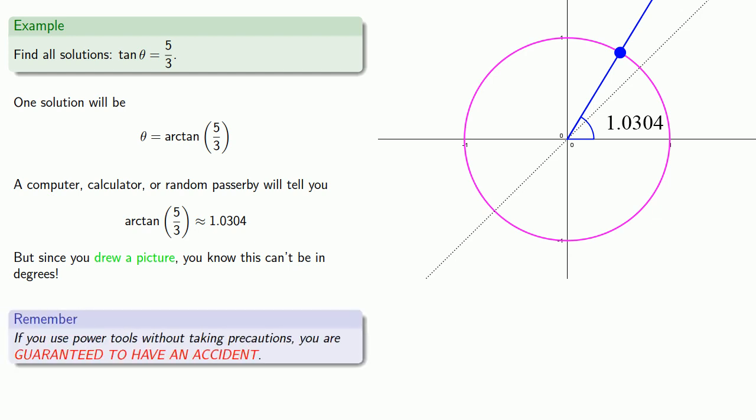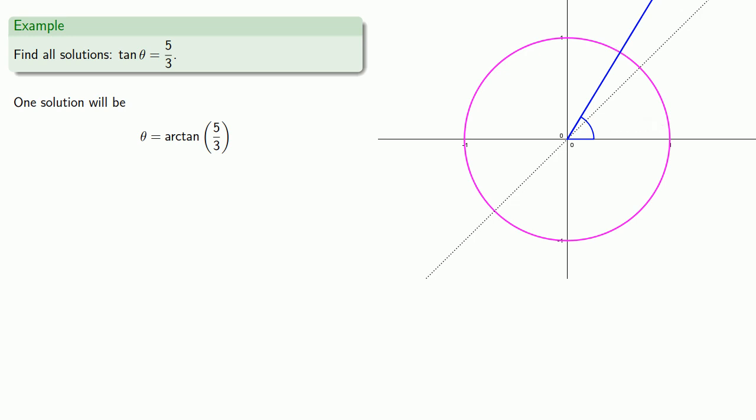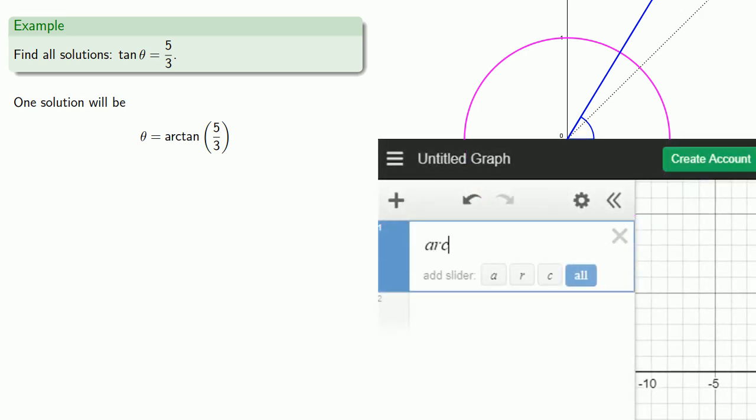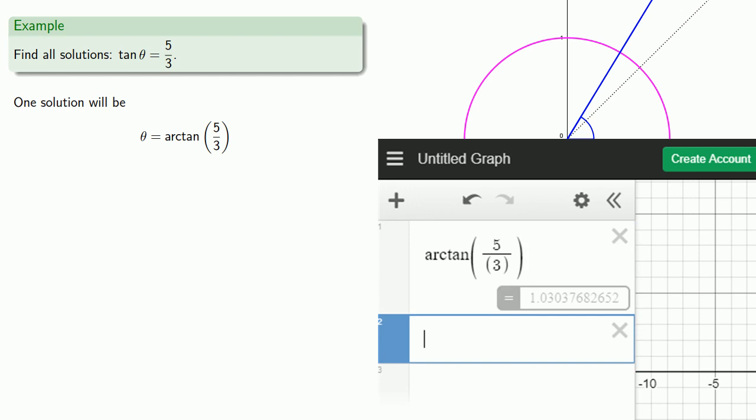And it's important to remember, if you use power tools without taking precautions, you are guaranteed to have an accident. In this case, the important thing to remember is that since measuring angles in radians is about a billion, billion, billion, billion, billion times more useful than measuring angles in degrees, most computers, calculators, computer algebra systems, and spreadsheets, and random passersby will give you the inverse trigonometric function values in radians unless you ask otherwise.